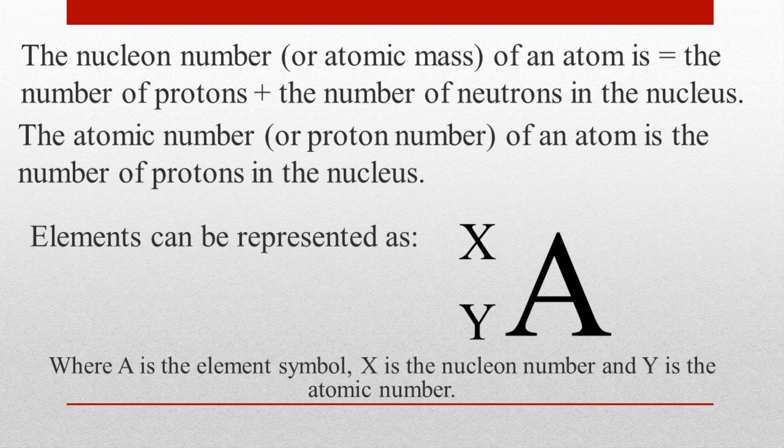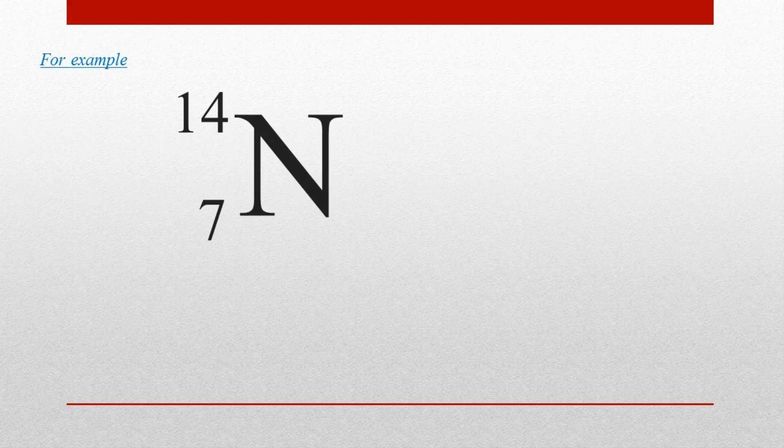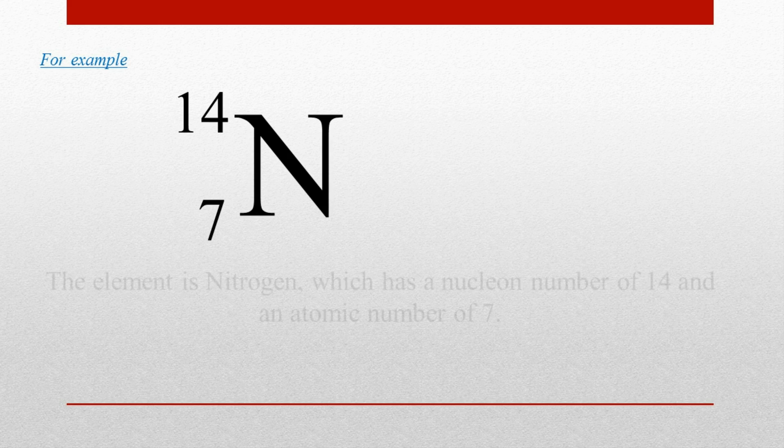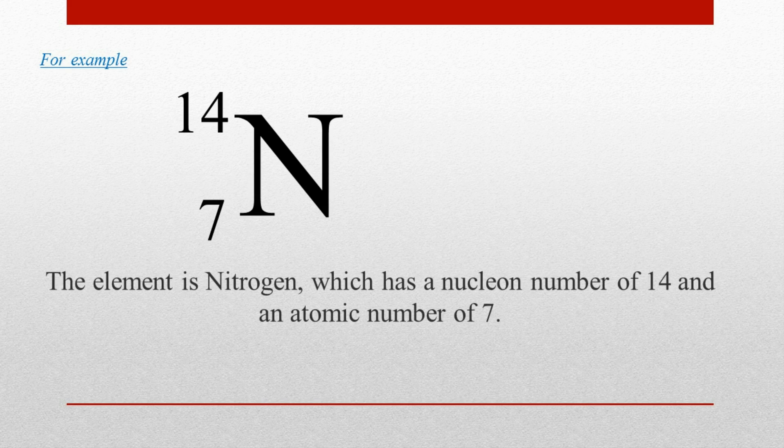For example, the element nitrogen can be represented as N with 14 above and 7 below. From this, we get the information that the element is nitrogen, the nucleon number is 14, and the atomic number is 7.